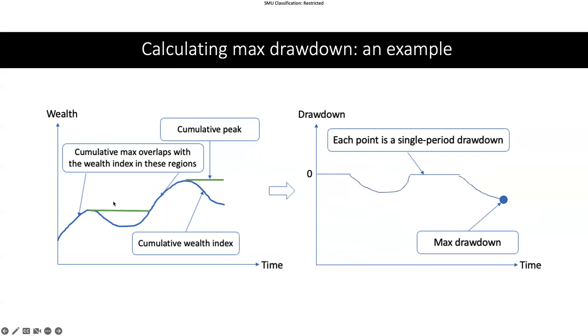I'm denoting the cumulative max by the green curve, which means that at each point I want to know what is the peak value cumulatively in the past. So if the price continues to increase, then these two lines overlap.